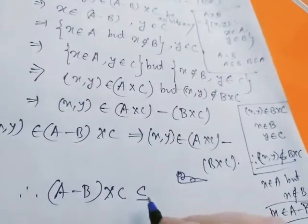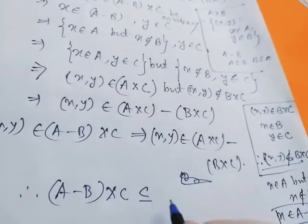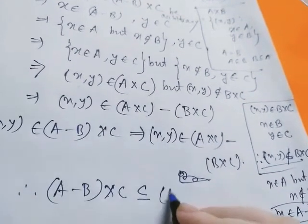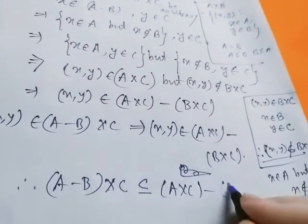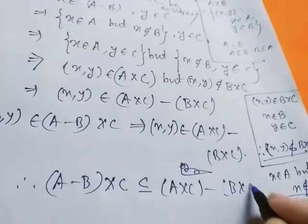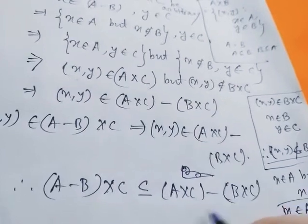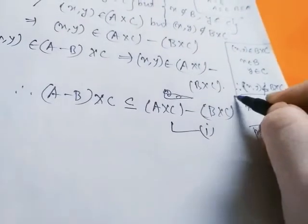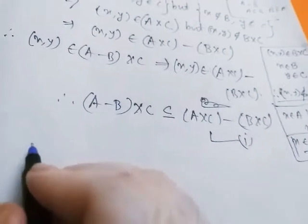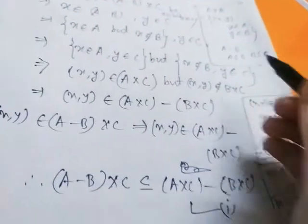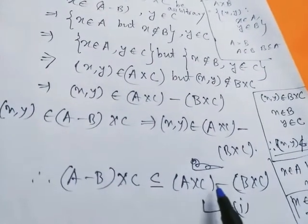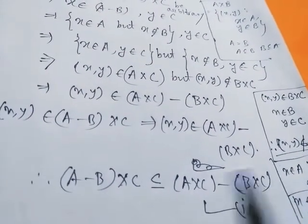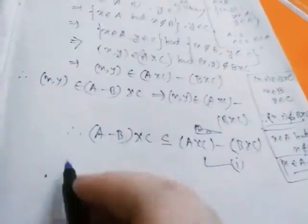Since (x, y) is arbitrary, this holds for any ordered pair. Therefore (A minus B) cross C is a subset of (A cross C) minus (B cross C) — we name this result 1. Now again, to show (A cross C) minus (B cross C) is a subset of (A minus B) cross C.